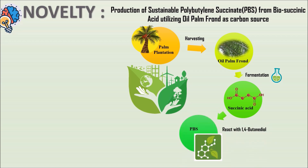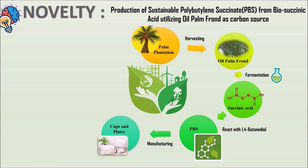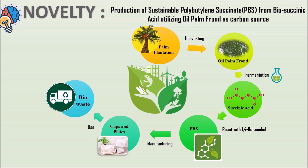The bio succinic acid is then reacted with 1,4-butanediol to produce polybutylene succinate, the bio-plastic. The PBS is further manufactured as cups and plates as the end products to the consumers. After usage, it turns into bio-waste and is sent to composting centers.